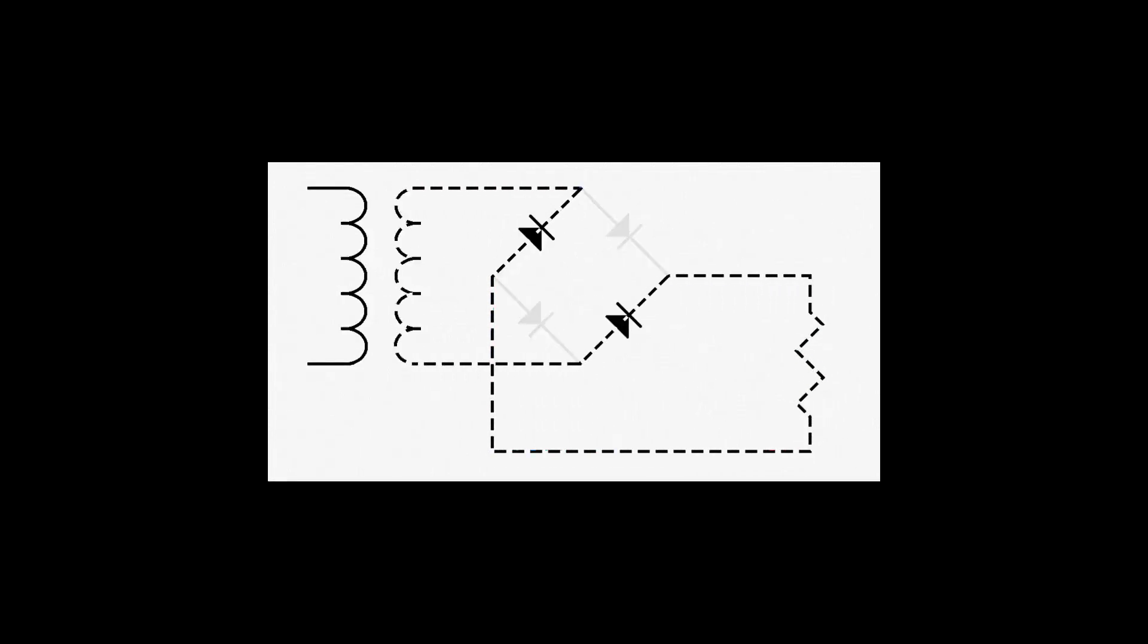In the second half of each AC cycle, the current flows in this direction through the transformer secondary. Now the current flows through this diode, through the load, then through this diode, and back to the transformer.